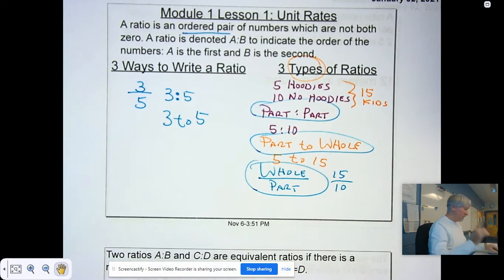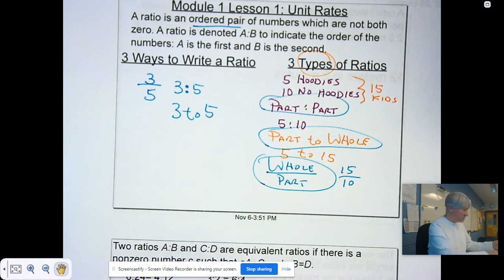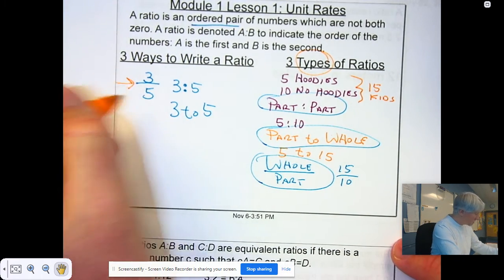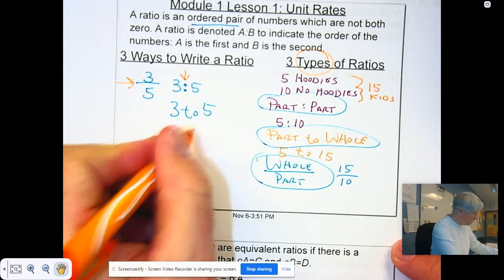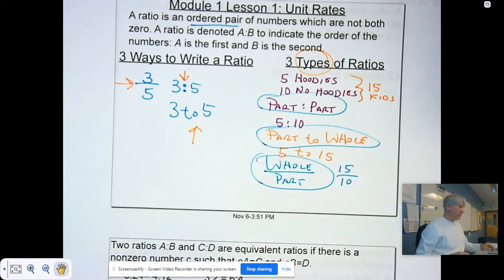So, what are your types? Your types are part to whole, part to part, and whole to part. And the three ways are the fraction, the colon, or the word 'to'. Now, on your homework and what we do in the future, please make sure you know the difference between the three ways to write the ratio and the three types of ratios.